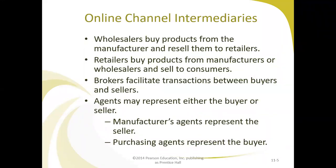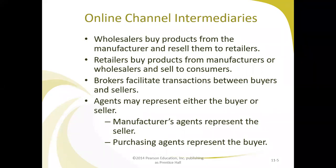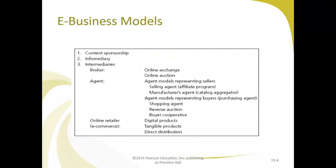Regarding online channel intermediaries: wholesalers buy products from the manufacturer and resell them to consumers. There is also the broker, who facilitates transactions between buyers and sellers for a commission. Agents may represent either the buyer or the seller — manufacturers' agents represent the seller, and purchasing agents represent the buyer. These are the main types of online channel intermediaries.